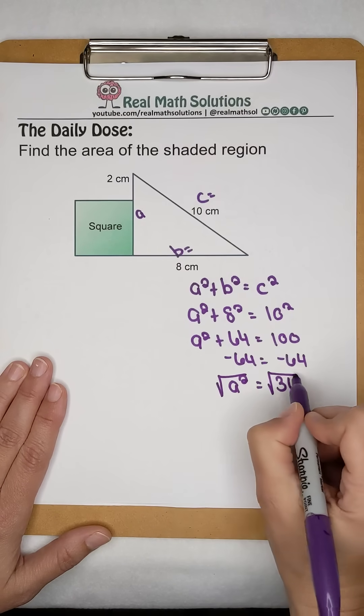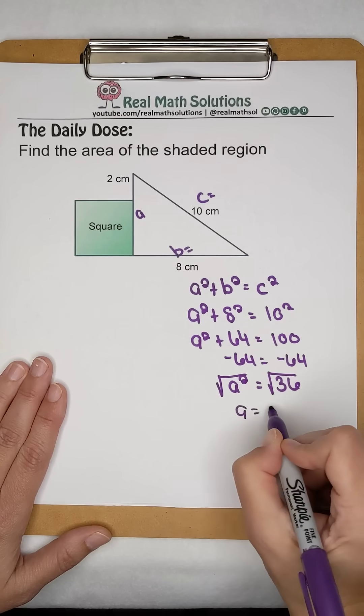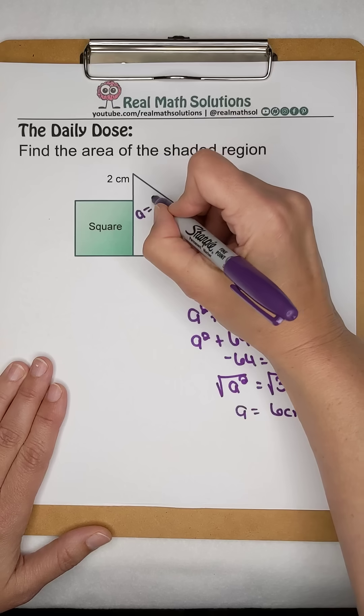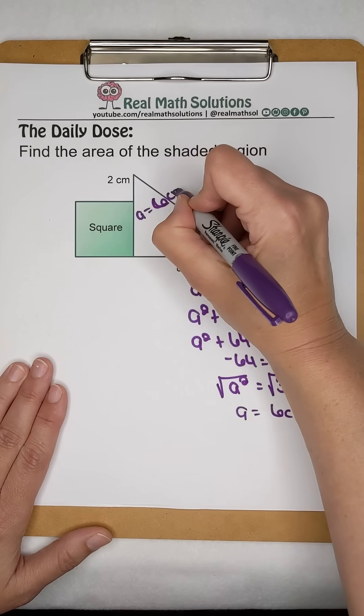So to get back to just a, take the square root of both sides. And that tells us that a is 6 centimeters. So up here, a is worth 6 centimeters.